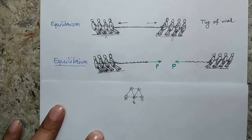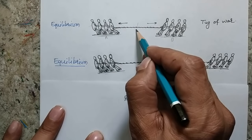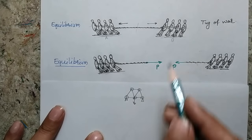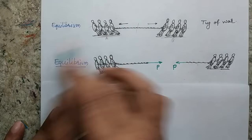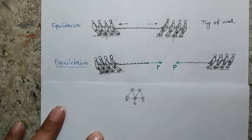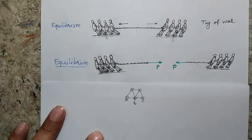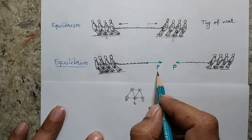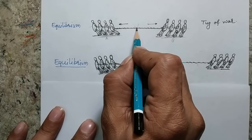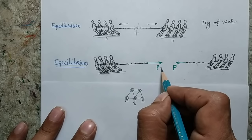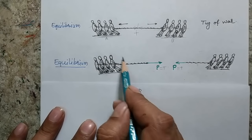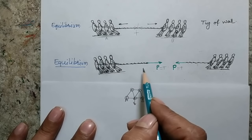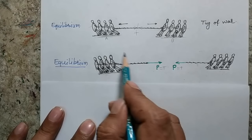Suppose someone cuts the rope from a point. Obviously, both teams will go flying — this team goes one side and that team goes the other side. But if I want to cut the rope while not breaking the equilibrium, I have to apply an equivalent force. Suppose there is a tension T; I have to apply a force P equal to tension T so that the members still feel an equal and opposite force and the system remains in equilibrium.